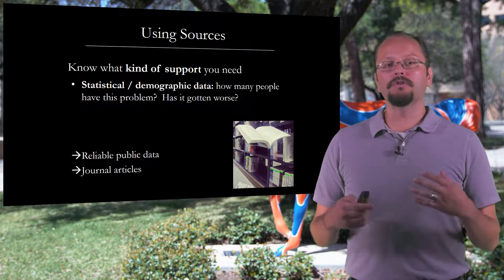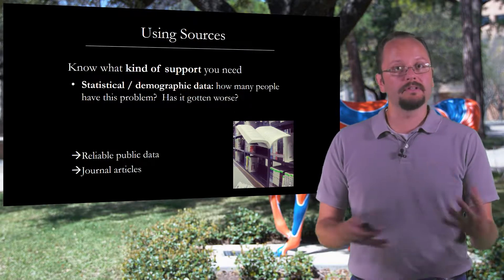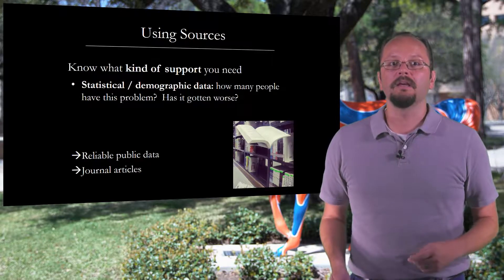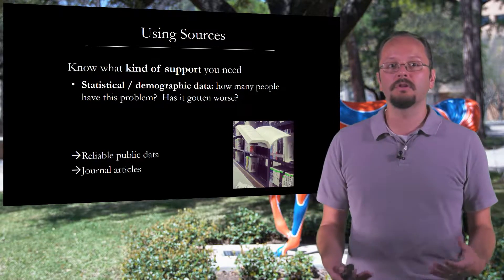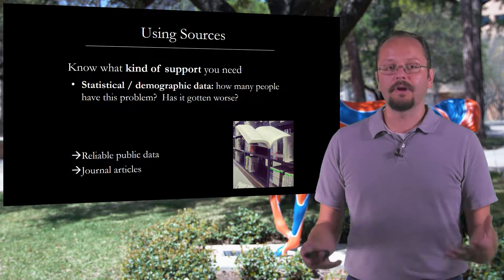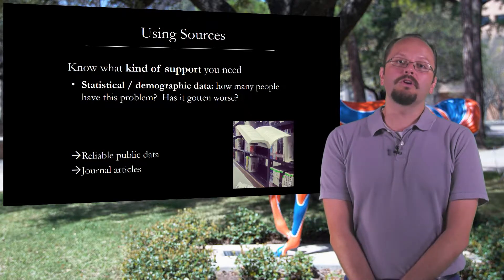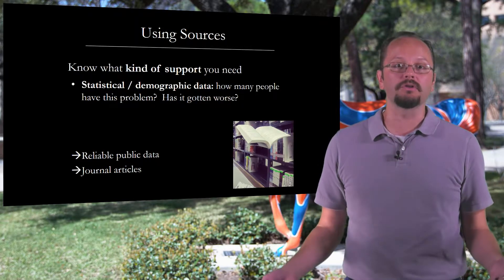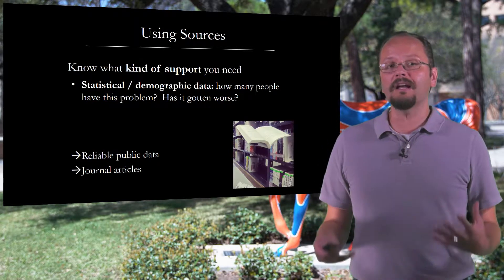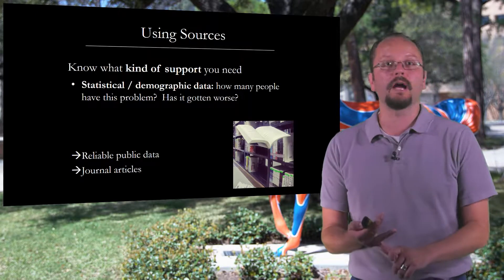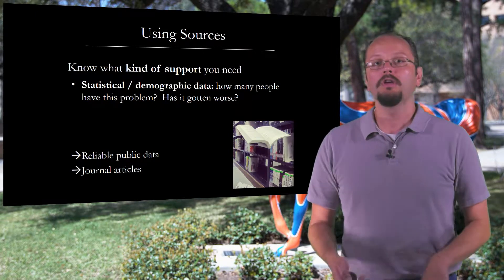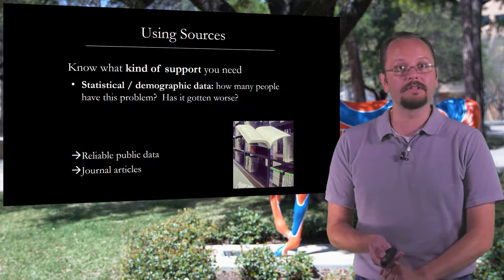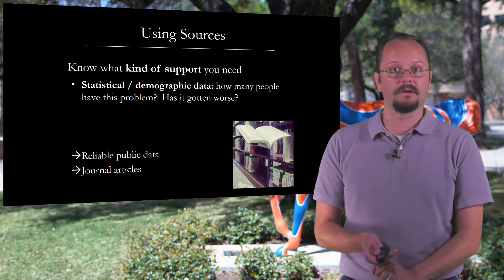You're going to want to know what kind of support you need for the individual parts of the project. For example, if you're using statistical demographic data, you might be answering questions like: how many people have the problem, or has the problem been getting worse? For that kind of information, you're going to be using reliable public data, and you might also be using academic journal articles that have gone into that data in some depth.